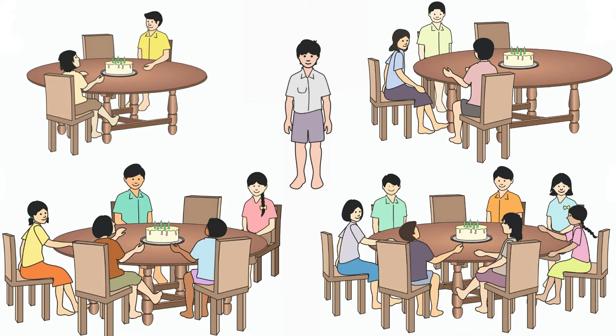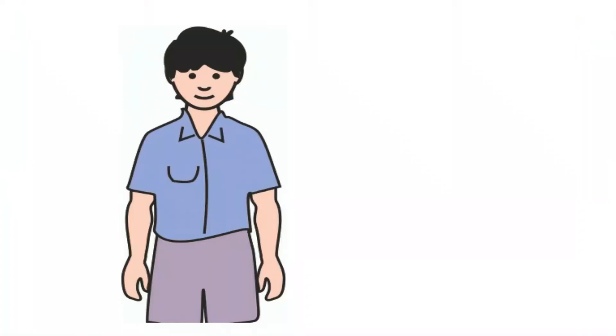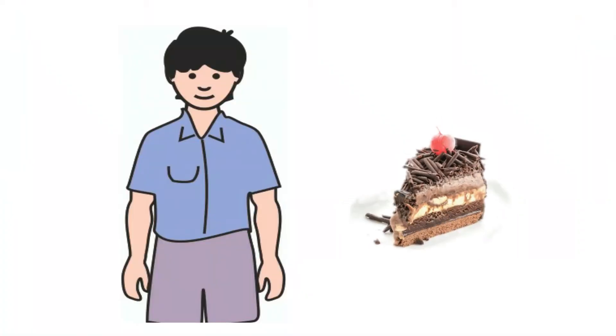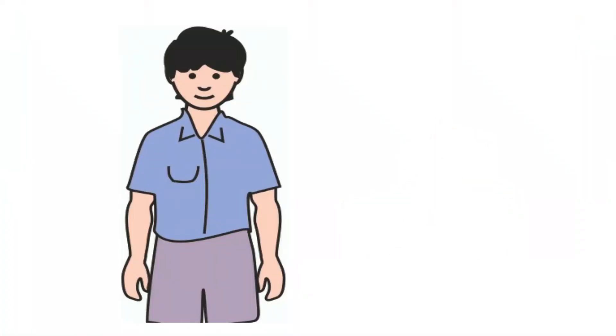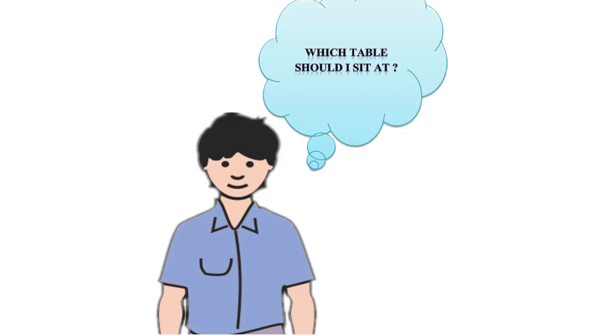When Arun goes to the party, he sees that all his friends are already seated randomly on four different tables. There is a cake on each table. He wants to eat a bigger piece of the cake. So, he starts thinking, which table should I sit at?